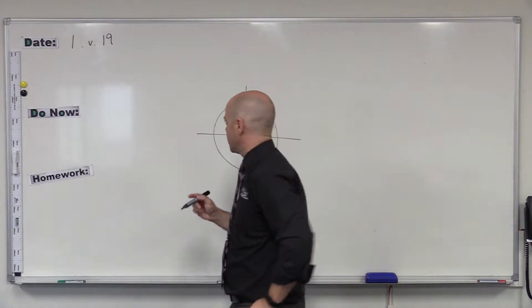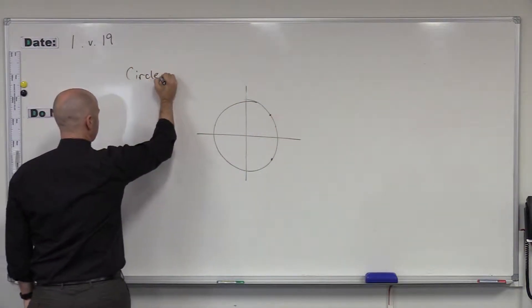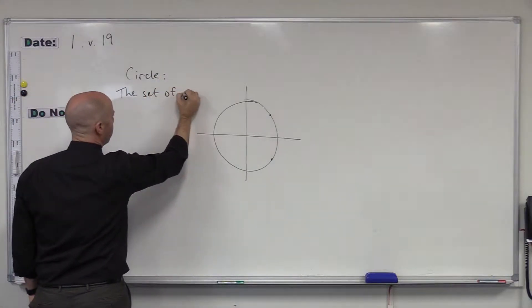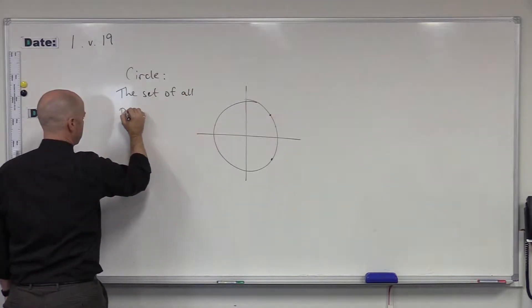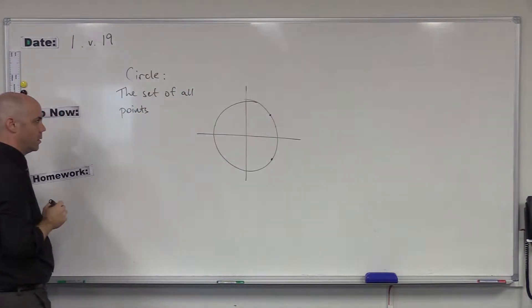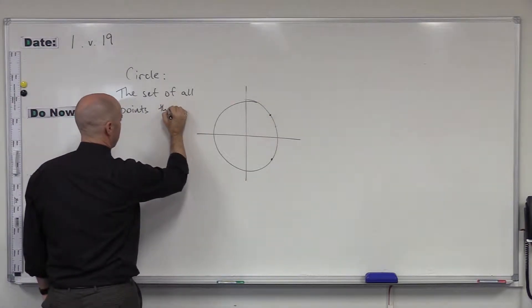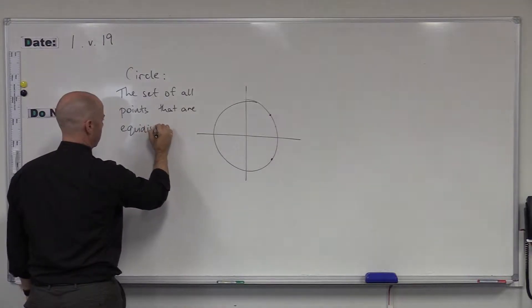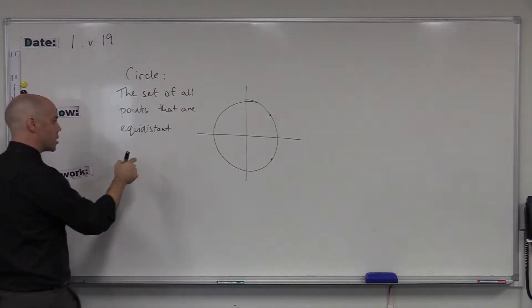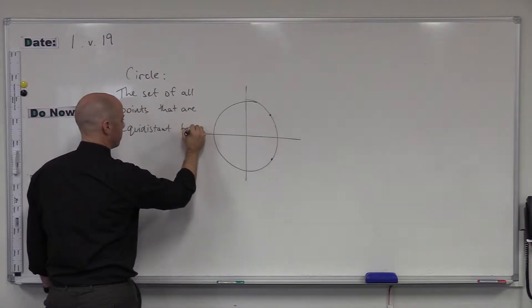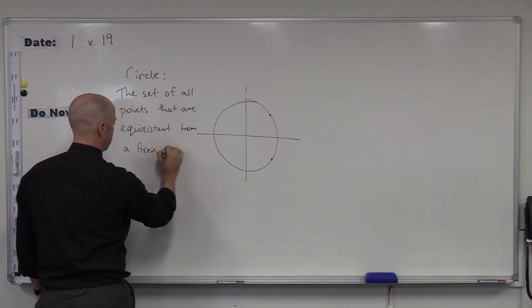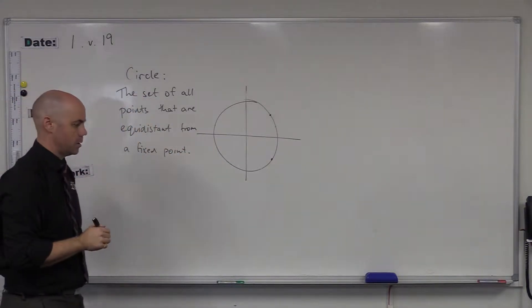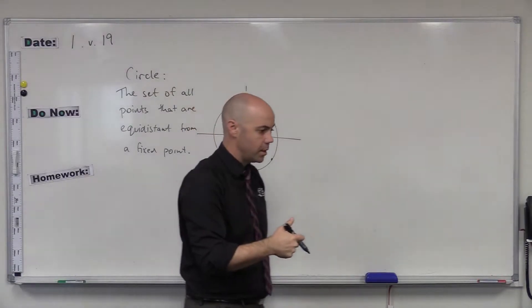We can define a circle as this. A circle is the set of all points that are equidistant. Equidistant. Same distance. Same distance, but are equidistant from a fixed point. Okay, and this fixed point is different to these all other points. The fixed point is the centre.